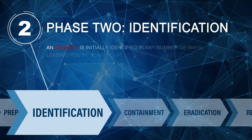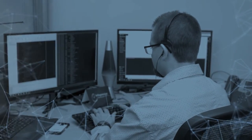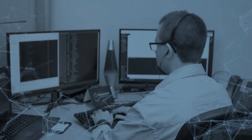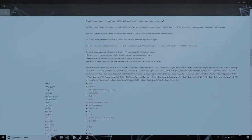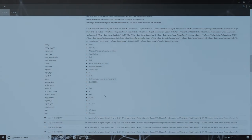Identification: an incident is initially identified in any number of ways, leading you to start your response plan with only slight awareness of what the incident may be. The identification phase is meant to clear this part up. This phase also includes the investigation of the depth of the compromise, its source, and its success or failure.